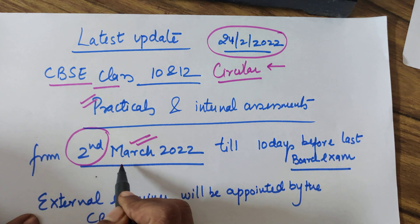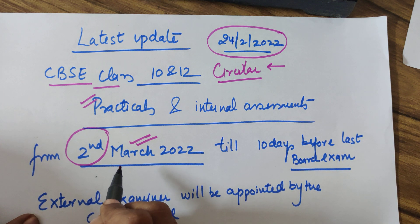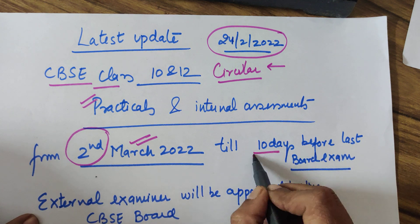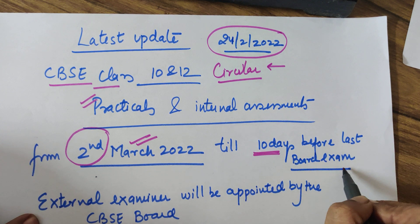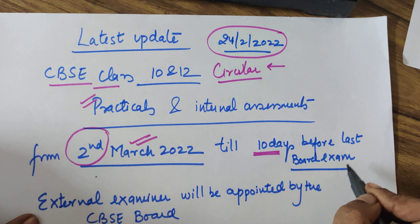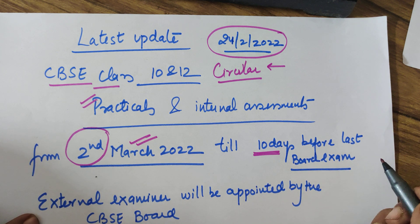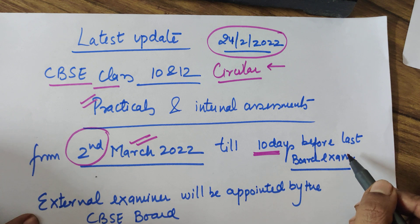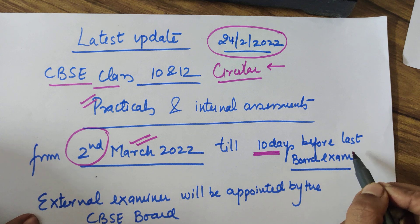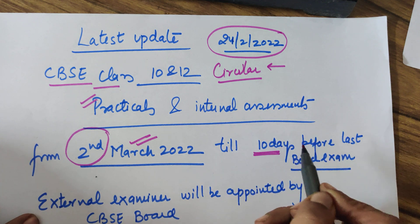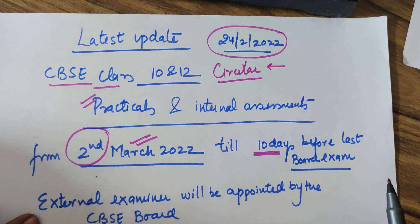2nd March is when they can start, which does not mean everybody has to start from that date. It can continue till 10 days before the last board exam. Your board exam is tentatively beginning around the end of April and ends around 20th May, which means practically it could continue till 10th May. But no school actually does this — your practical and internal assessments all happen at least 12 to 15 days before your exam begins.